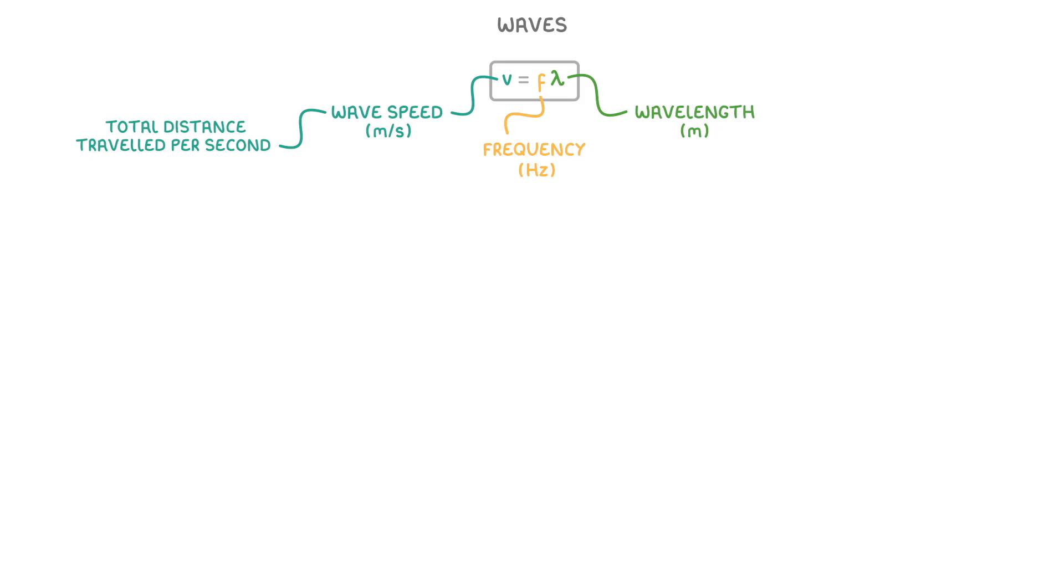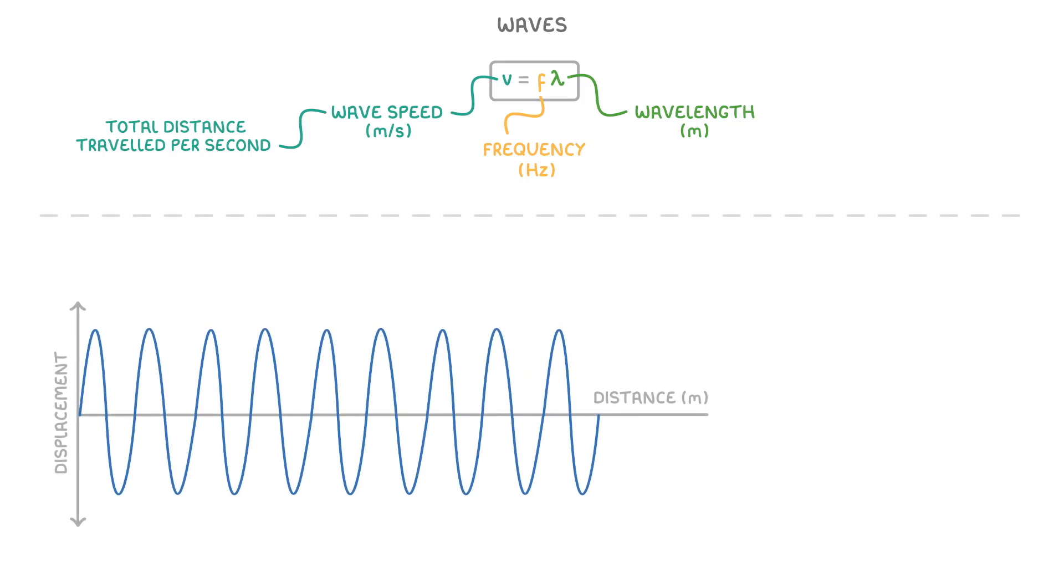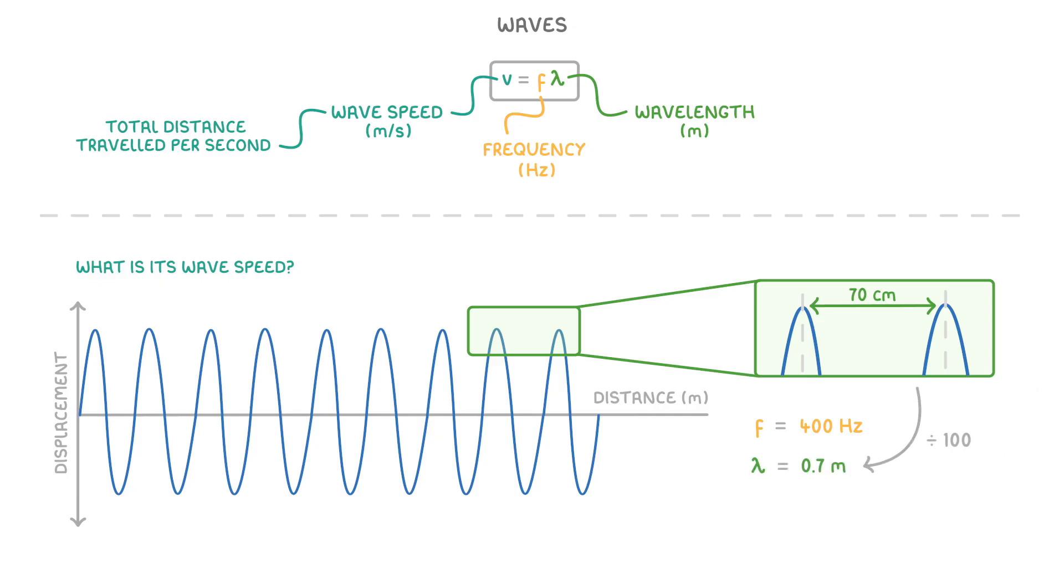To see how this works, let's imagine we had a sound wave that had a frequency of 400 hertz, and a wavelength of 70 centimeters. What is its wave speed? Well in this case all we'd have to do is convert the 70 centimeters to 0.7 meters, because we always want our wavelength in meters, and then multiply it by the frequency of 400 hertz, which gives us 280 meters per second as our wave speed.